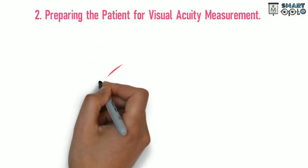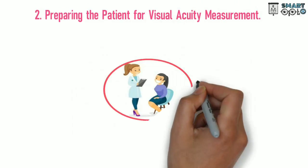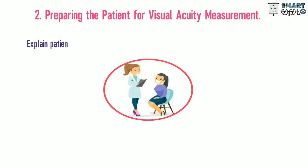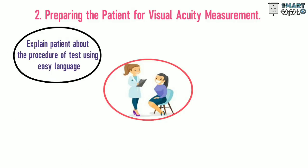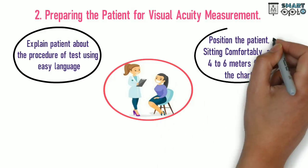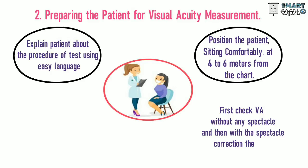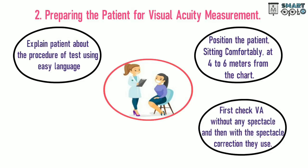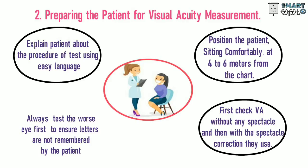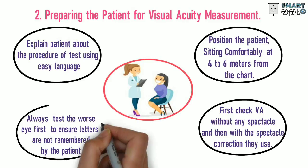Preparing the patient for visual acuity measurement: explain the procedure to the patient using easy language. Position the patient sitting comfortably at 4 to 6 meters from the chart. First check visual acuity without any spectacles and then with the spectacle correction they use. Always test the worst eye first to ensure letters are not remembered by the patient.